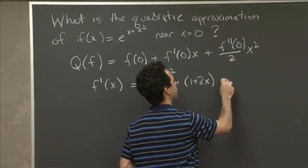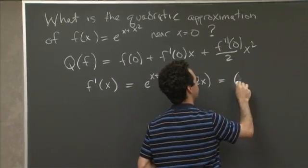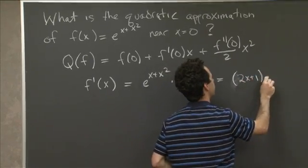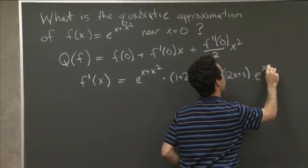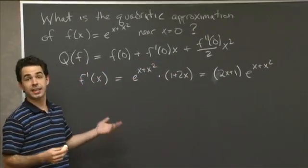is e^(x+x²) times (1 + 2x), which I can also write as (2x + 1) times e^(x+x²). OK, so that's the first derivative.